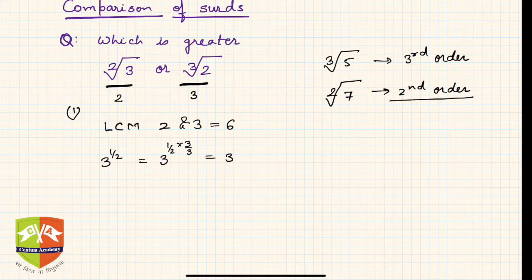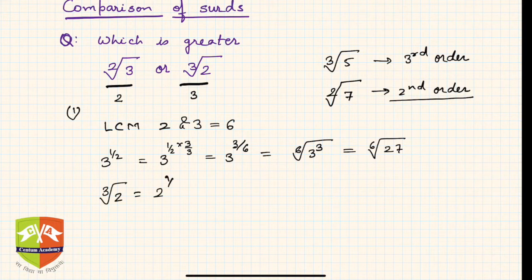The second case is cube root of 2, which is 2 to the power 1/3. This can be written as 2 to the power 1/3 times 2/2, hence 2 to the power 2/6, which is sixth root of 2 squared, equal to sixth root of 4.